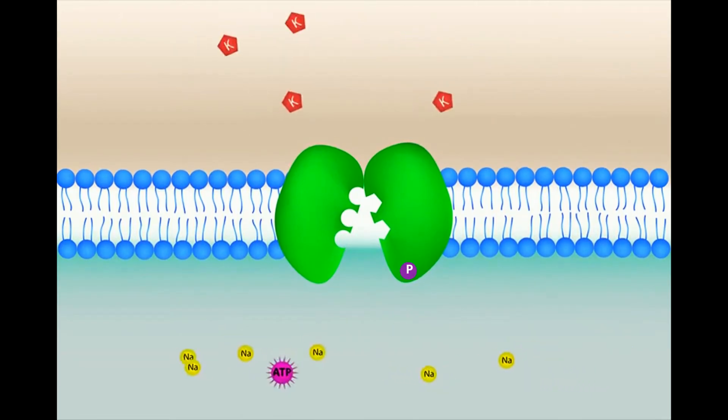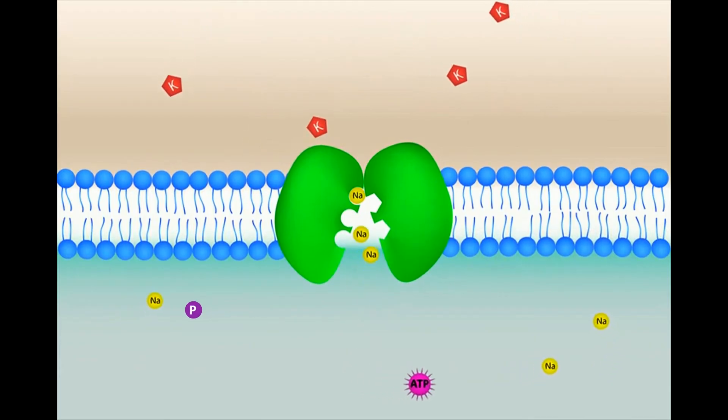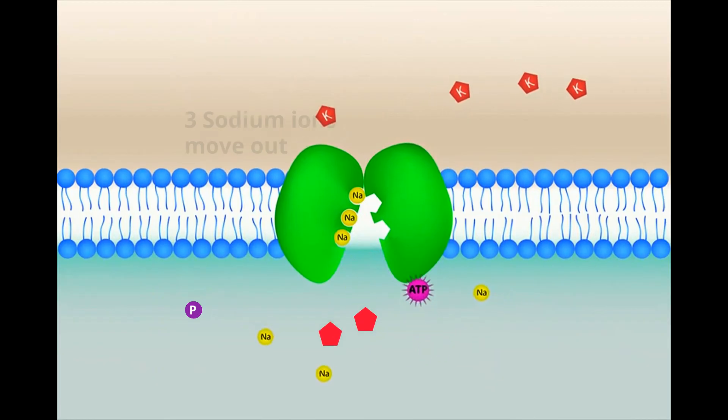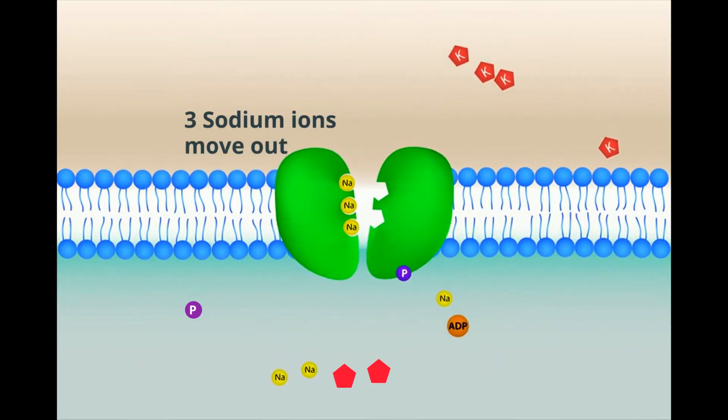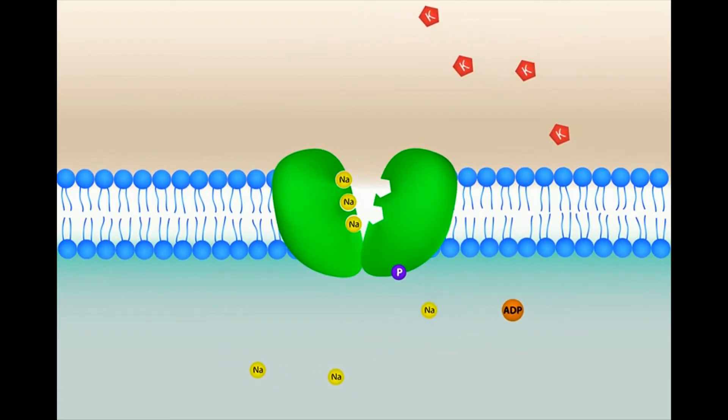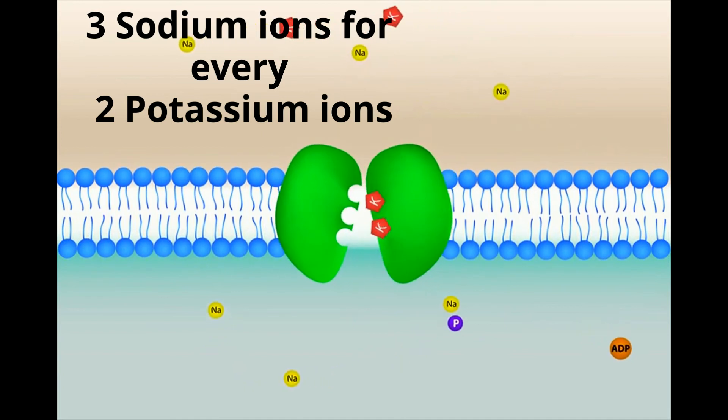The phosphate is released and the carrier protein moves back to its original shape. As a result, two potassium ions move into the cell and three move out and this cycle repeats. The ratio is three sodium ions for every two potassium ions.